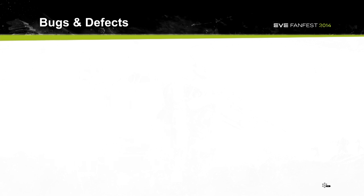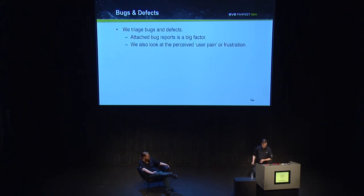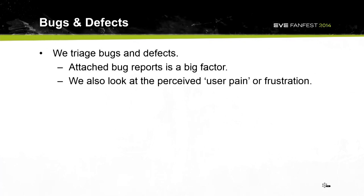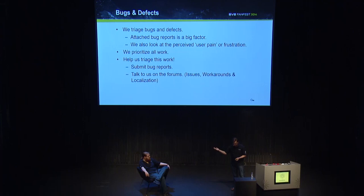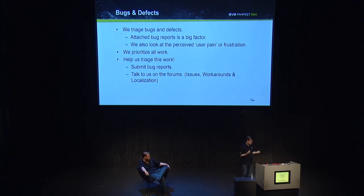Now that we plan for defects, we also have hardening sprints and release sprints when we exclusively look at those lists. We have measurement tools to find out how much of a pain something is for users — we recognize that pain. But we don't always get it right. Some of you will ask why a defect you reported over a year ago hasn't been fixed. What we really need is more help triaging — create more bug reports. If you reported something over three months ago and it's still in the game, keep talking to us about it on the forums and submit bug reports. The only way we'll know how painful it is is if you report it.